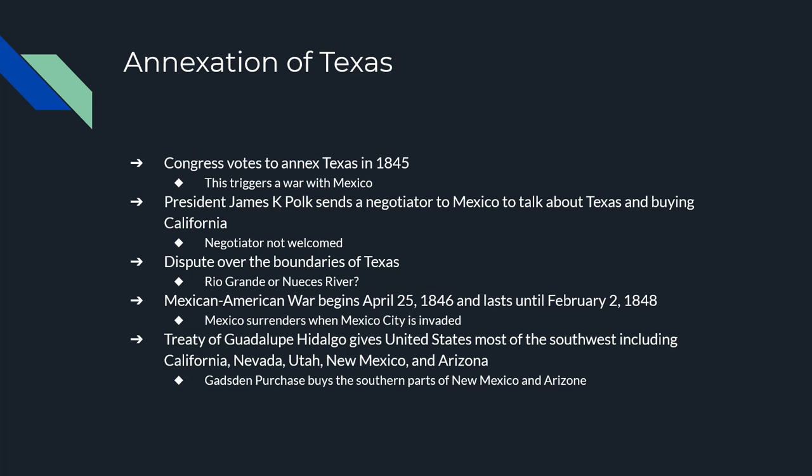Finally, in 1845, Congress voted to allow Texas to become part of the United States, and as feared, a war broke out between Mexico and the United States. President James K. Polk sent a negotiator to Mexico to talk about Texas and offer to buy California, but Mexico was in the middle of its own civil war and there was no room for negotiations. When they finally did meet, there was a dispute over where the boundary would be — the area between the Rio Grande and another river was really just empty land, but it became a sticking point. When they couldn't solve the dispute, the Mexican-American War officially broke out on April 25, 1846, and lasted a little less than two years.